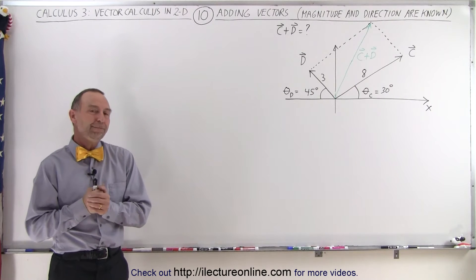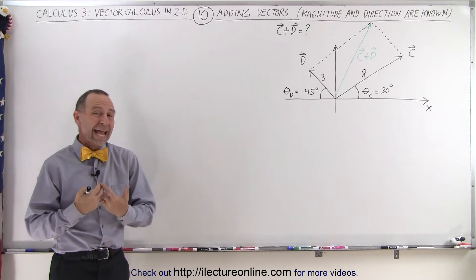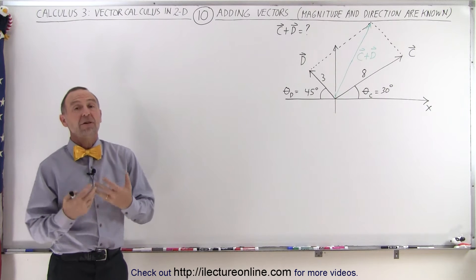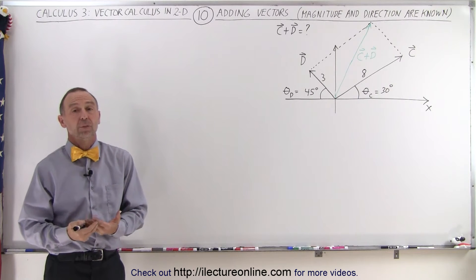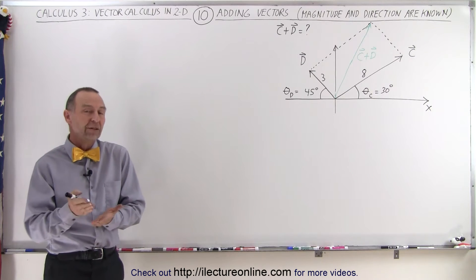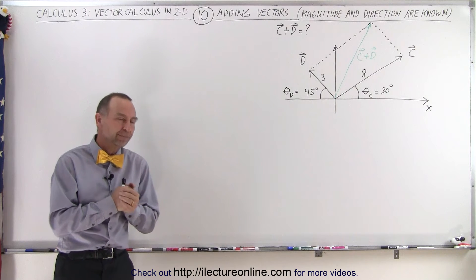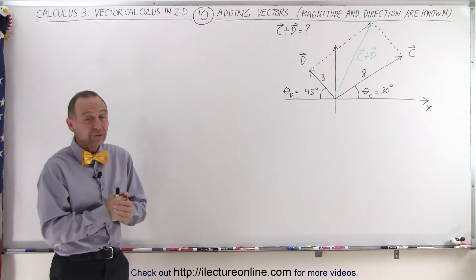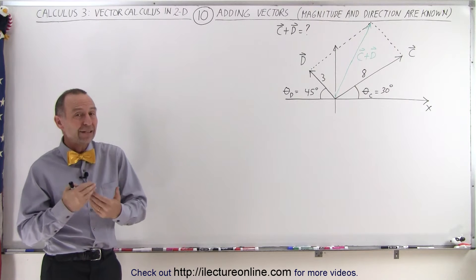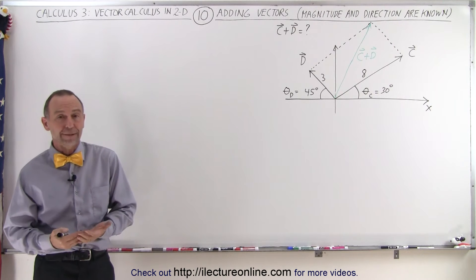Welcome to our lecture online. So far we've only been adding vectors together that have positive components — in other words, all the components point in either the positive x or the positive y direction. But what if the components are pointing in a negative direction? How do we add the vectors then?